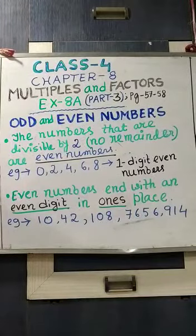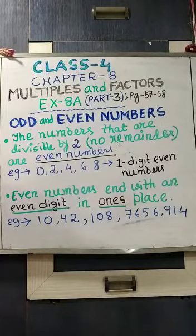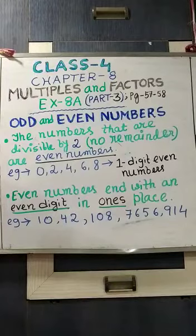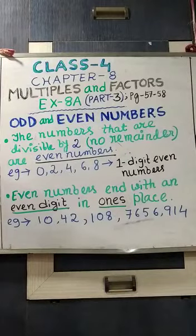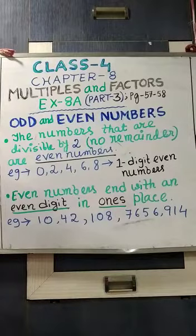Namaskar students, today we will continue with our chapter number 8, multiples and factors, exercise 8A, part 3, page number 57-58 of our Junior Maths Book 4. So all of you take out your Junior Maths Book 4 and open at page number 57 and then 58.